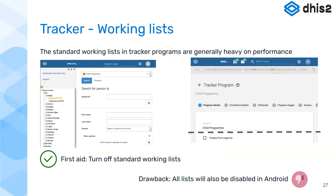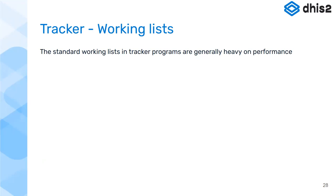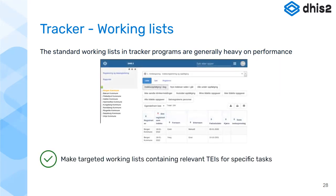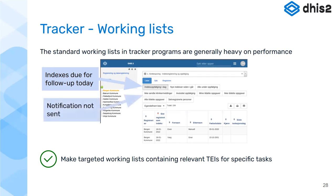The standard lists may not be very useful, and it might be better to make custom lists. For example, from the Norwegian COVID system, the first list shown was 'Indexes due for follow-up today' — not a very long list, but with a good chance you can just click a name and go directly into the record you need. Other lists they had were 'Notification not sent,' 'My assigned tasks,' and 'Unassigned tasks.'